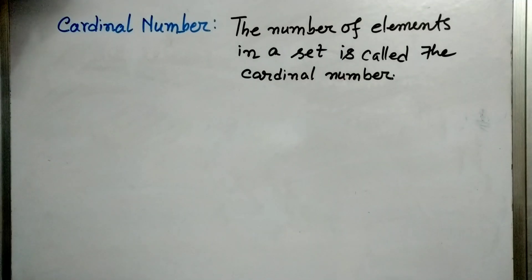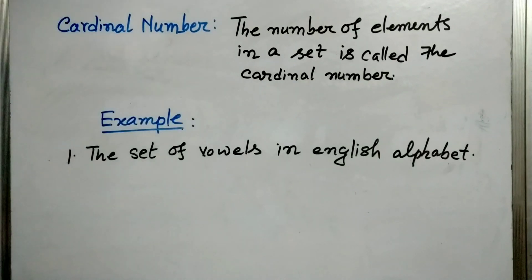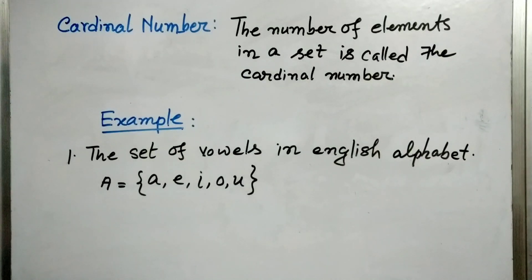So our first topic is cardinal number. The number of elements in a set is called the cardinal number. So let us go for an example. The set of vowels in English alphabet.